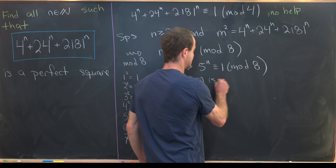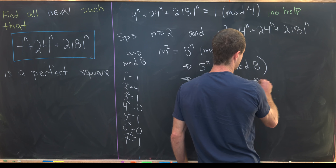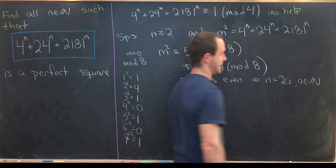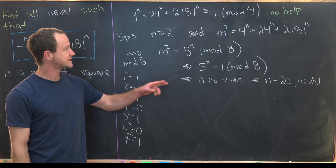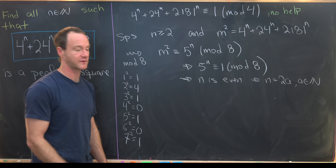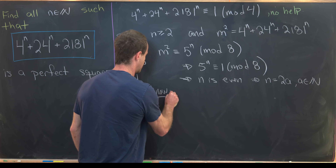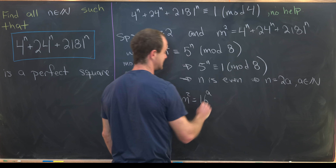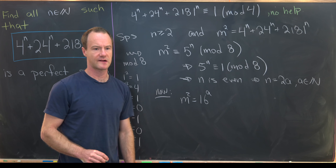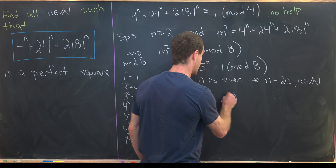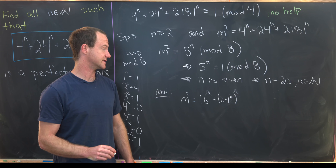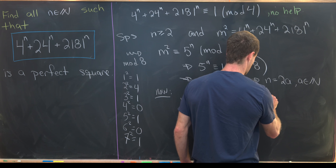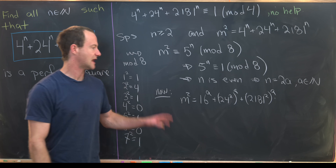So n must be even, meaning we can write n = 2a for some natural number a. Substituting back into the original expression, m² = 16^a + (24²)^a + (2181²)^a.